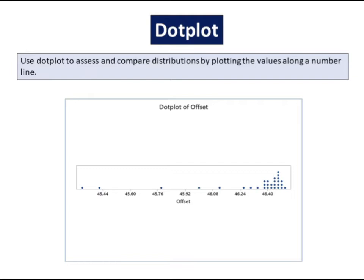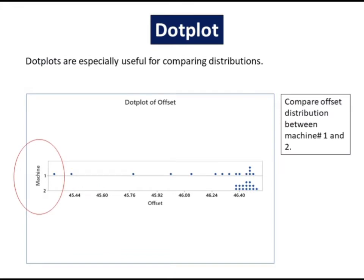What is dotplot? Use dotplot to assess and compare distributions by plotting the values along a number line. Dotplots are especially useful for comparing distributions.